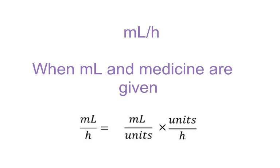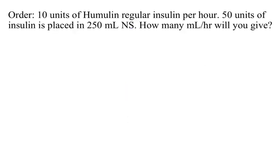Now the last type: when you're given milliliters and the medication in the bag. The first piece of information is what's in the IV bag — how much medicine is in the liquid. The units per hour is what they call the dosage rate — like how many milligrams or units per hour the patient is going to receive. We're going to follow the same process of dimensional analysis.